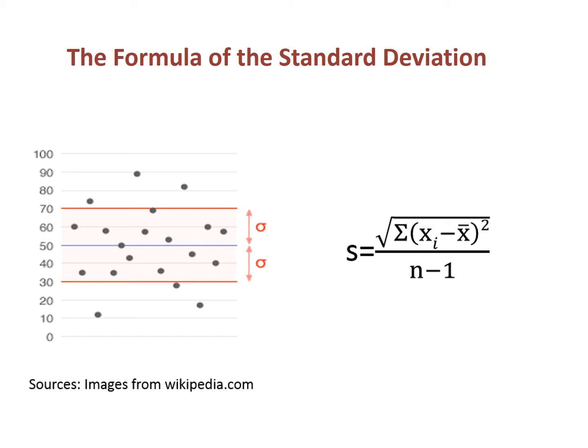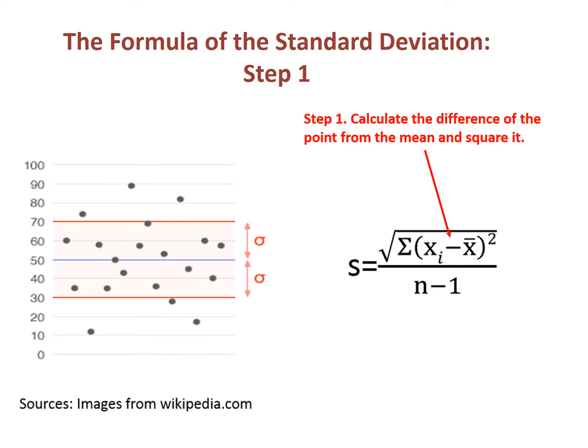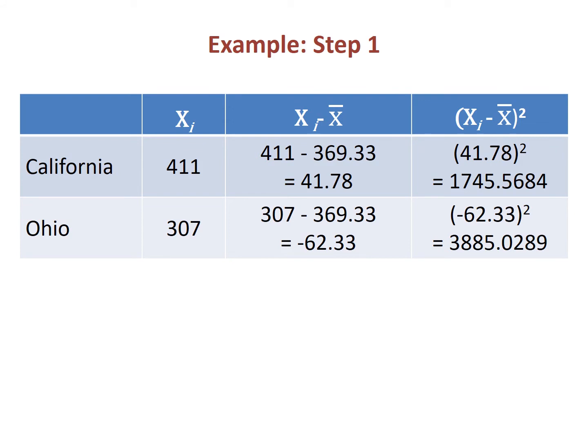We will look at the equation and work through its calculation using a couple of data points. In the first step, we take the difference of every point from the mean of the distribution, then square it. Squaring might seem strange, but this approach to distance is commonly used in Euclidean geometry — for example, with the Pythagorean theorem. Here I do this calculation on the violent crime rates for California and Ohio. The X minus X-bar column is the distance between the point and the mean, positive if above the mean and negative if below. In the final column, we square the distances, which turns each number positive.